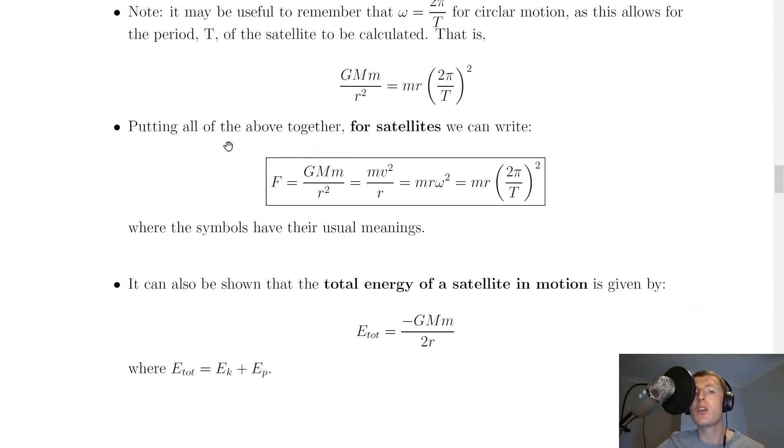Putting all of the above together, for satellites we can write F = GMm/r² = mv²/r = mrω² = mr(2π/T)², where the symbols have their usual meanings.